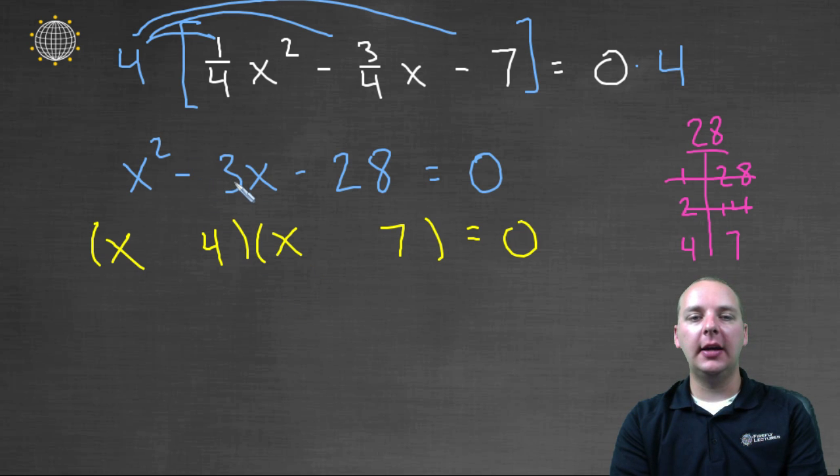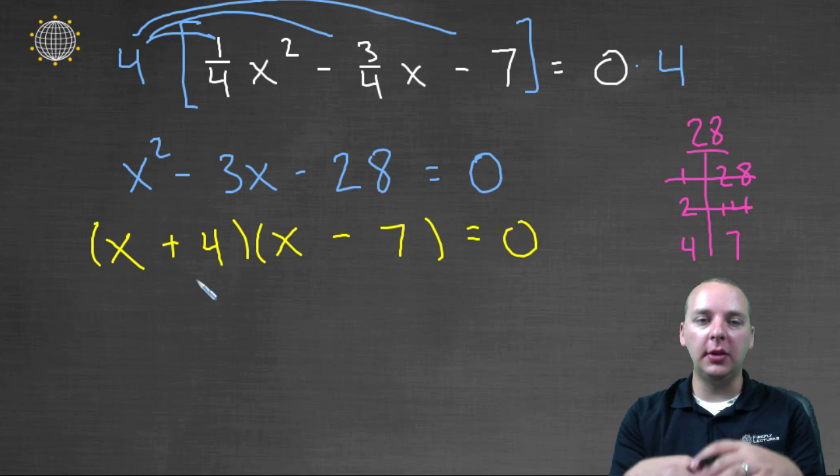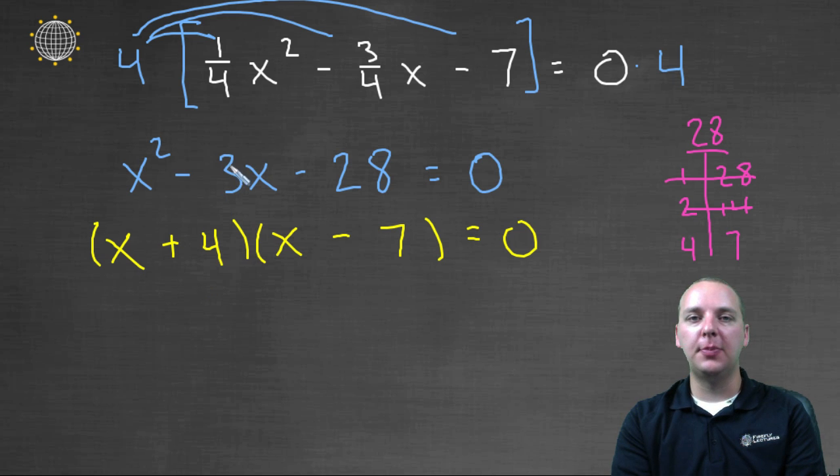To get a negative three x, the outer would have to be minus seven x, and the inner would have to be plus four x. Minus seven plus four would give us minus three. And then as a bonus, four times negative seven multiplies to give us negative twenty-eight. So everything works good, I factored correctly this quadratic.